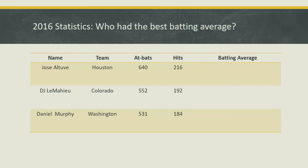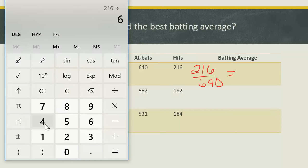Let's calculate some batting averages from the 2016 season and then rank to see who had the best batting average. Jose Altuve from Houston had 640 at bats and got 216 hits. His batting average is 216 divided by 640, which gives 0.3375. We want to round to three decimal places, and the five to the right tells us to round up, so his batting average is 0.338.